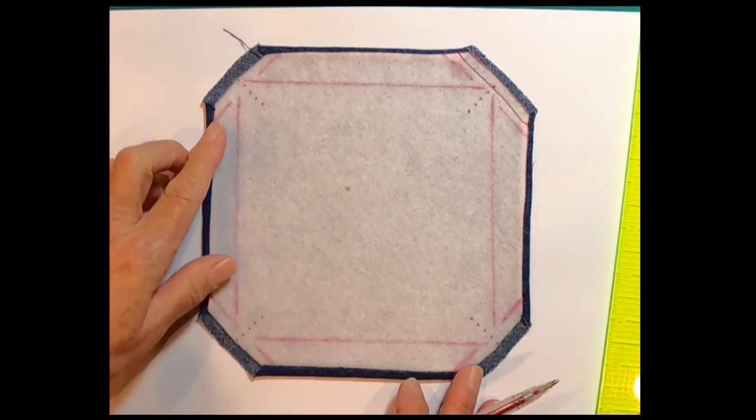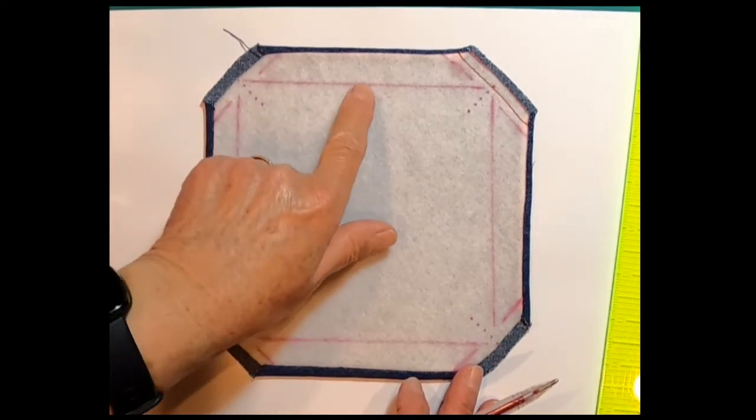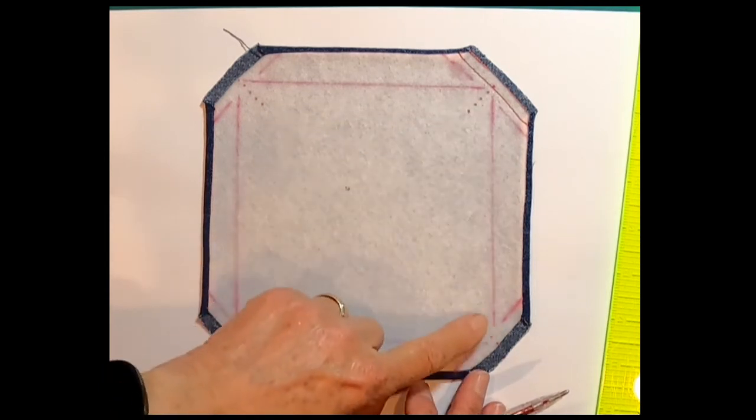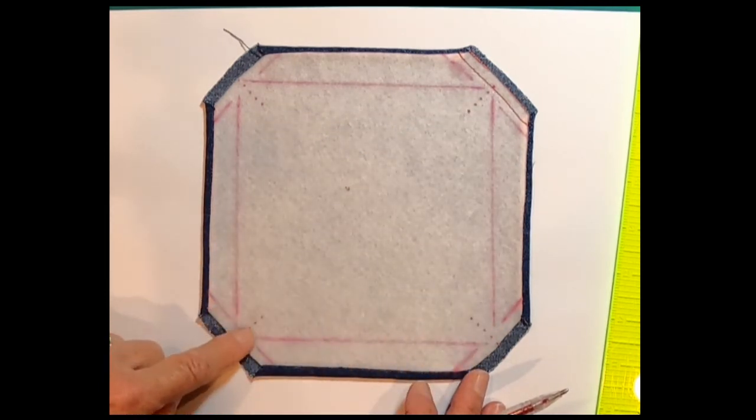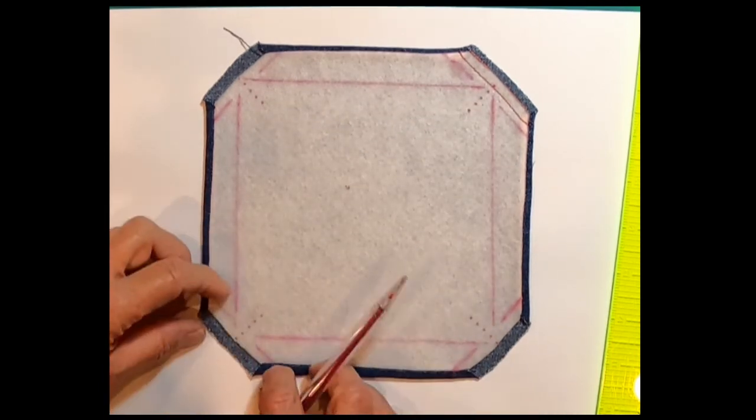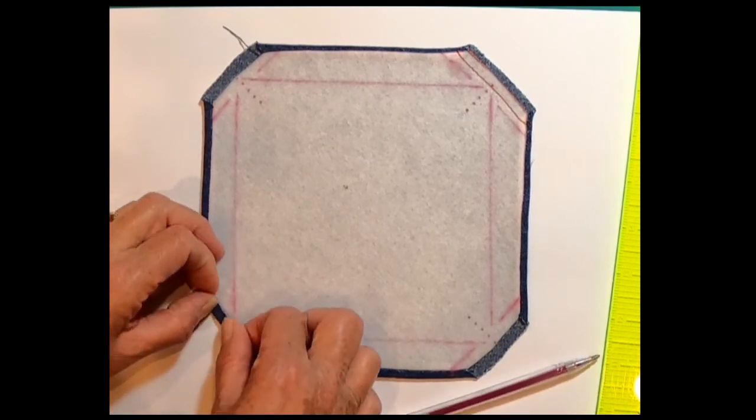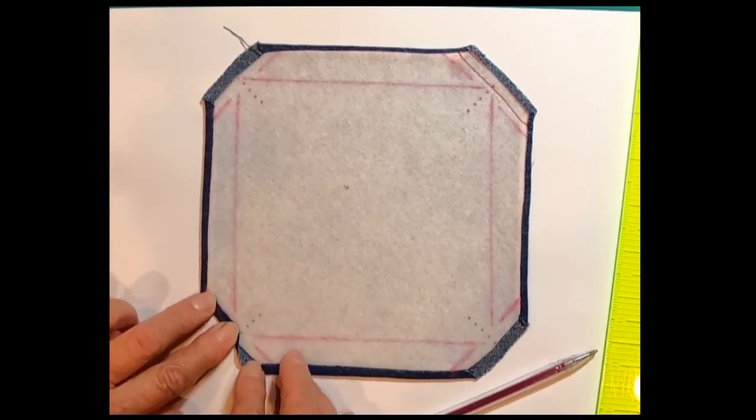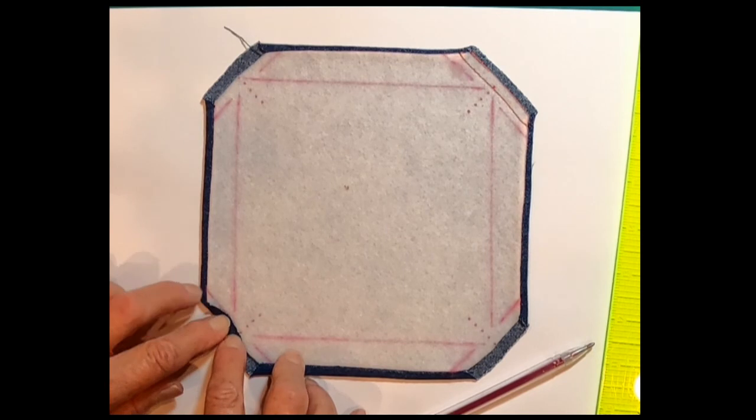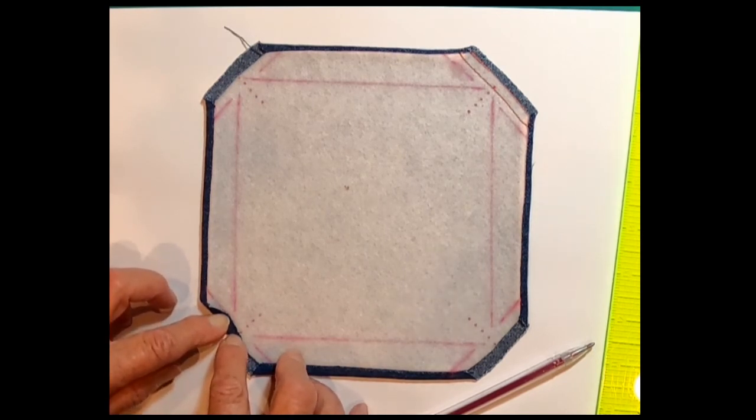When I'm finished, all of the blocks that I'm using are going to have a stitching line, centering guides, and they're also going to have this line which indicates where you fold the beveled edges down to meet when you're going to turn the edges and corners.